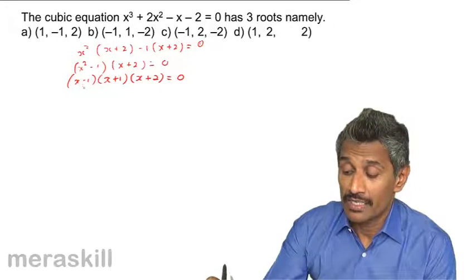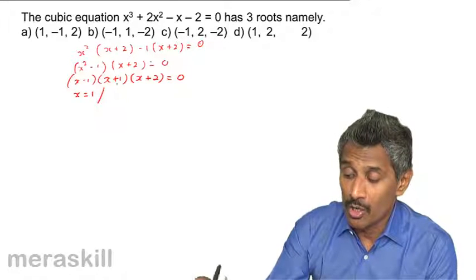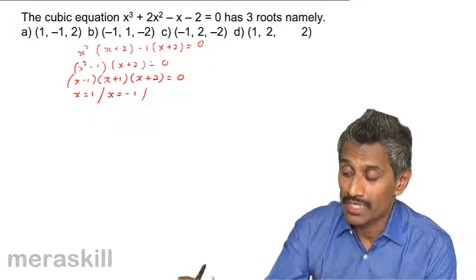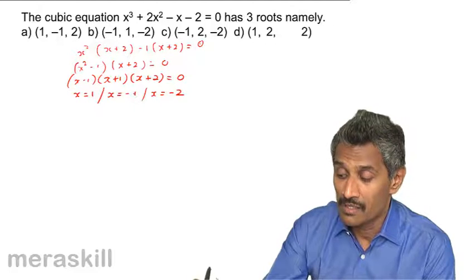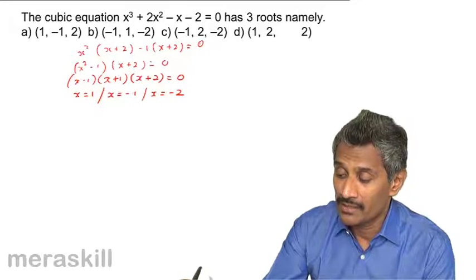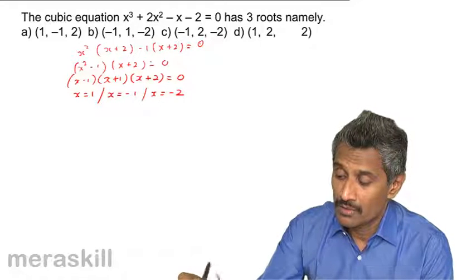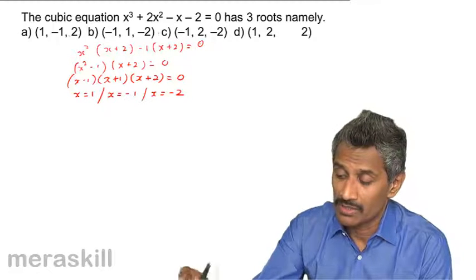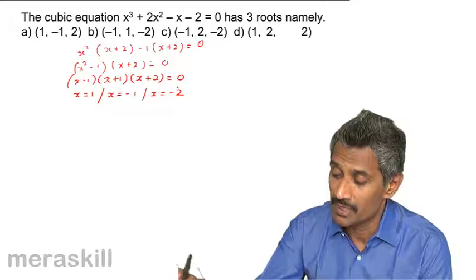Setting each factor to zero: x - 1 = 0 means x = 1; x + 1 = 0 means x = -1; x + 2 = 0 means x = -2. So the roots are 1, -1, and -2. Looking at the options, it is going to be 1, -1, -2.